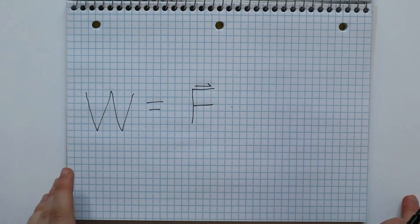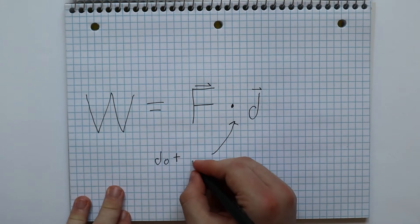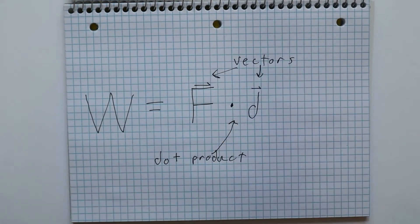Take the example of physics. The formula for work is work equals force dotted with displacement. The dot here represents the dot product, which is a type of vector multiplication.